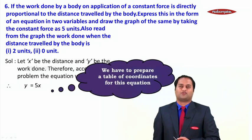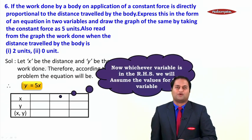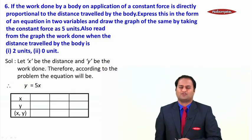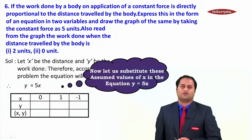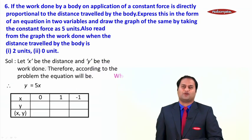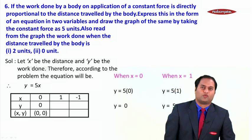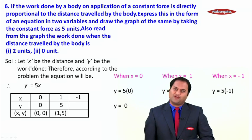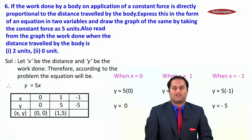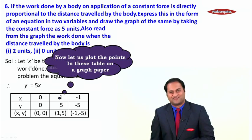Now let us draw the graph. To draw the graph we need to form a table with x and y values. Assume values for x (the right-hand side variable) — say x = 0, 1, and −1. When x = 0, y = 5 × 0 = 0, giving the point (0, 0). When x = 1, y = 5 × 1 = 5, giving the point (1, 5). When x = −1, y = 5 × −1 = −5, giving the point (−1, −5).